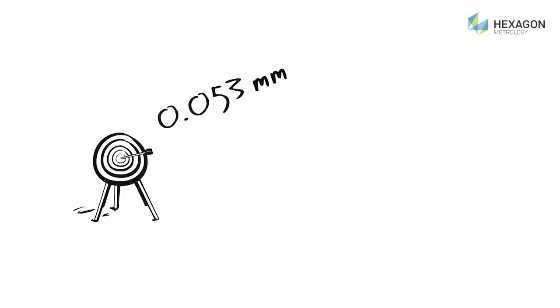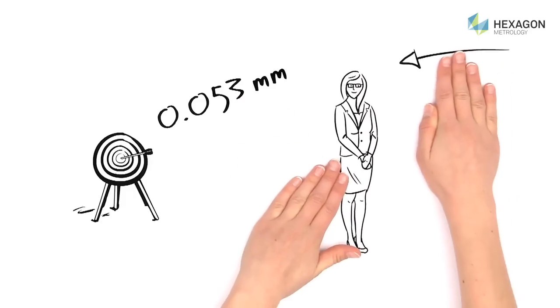He also works with the utmost precision, since Hexagon Metrology guarantees a measurement accuracy of 0.053 mm. That's about the diameter of a human hair.